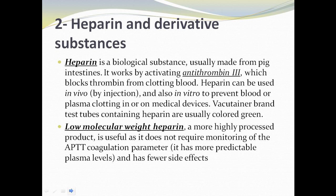Second type: heparin and derivative substances. Heparin is a biological substance, usually made from pig intestine. It works by activating antithrombin 3, which blocks thrombin from clotting blood. Heparin can be used in vivo by injection and also in vitro to prevent blood or plasma clotting in or on medical devices.